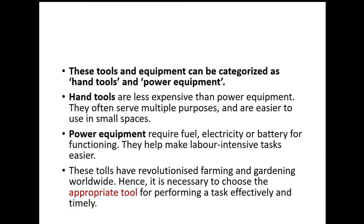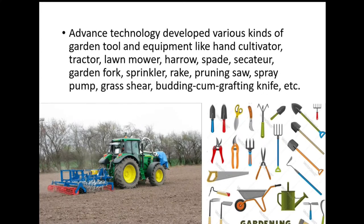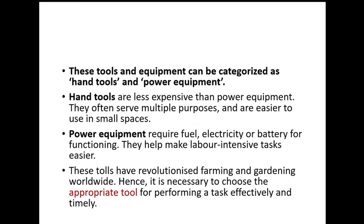Hand tools are less expensive than power equipment; they often serve multiple purposes and are easier to use in small spaces. Power tools are bigger, requiring fuel, electricity, or battery, and they help make labor-intensive tasks easier. For example, plowing one acre of land with a bullock cart takes one or two days, but with a tractor, you can finish it in one hour. Proper tools have revolutionized farming and gardening worldwide.